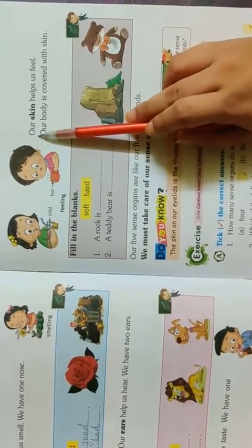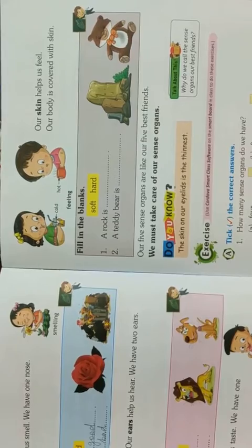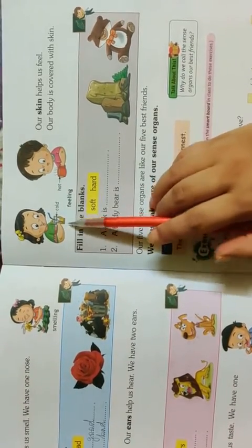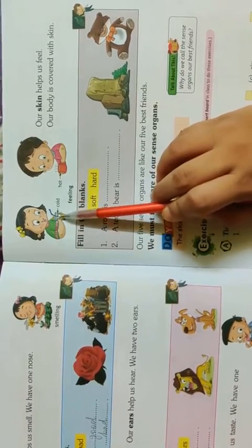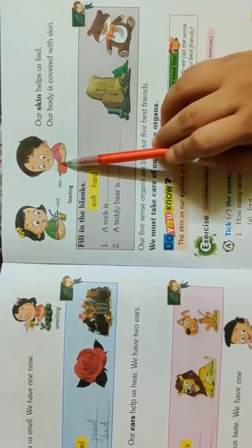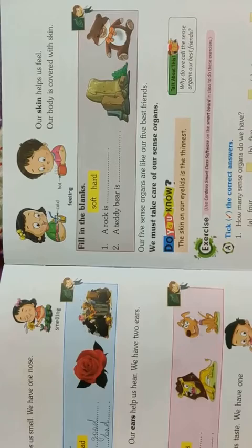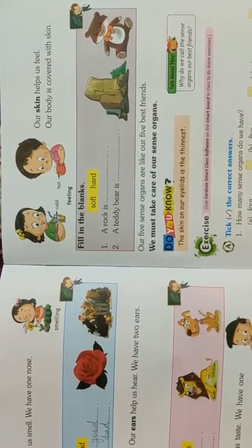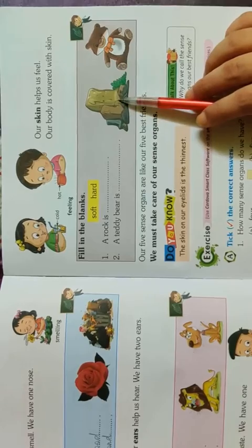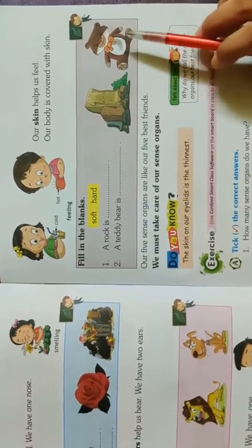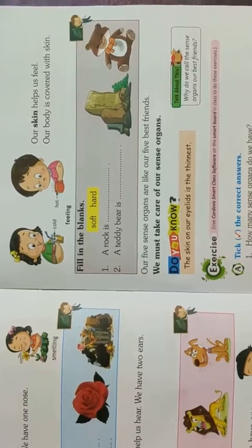The next sense organ is skin. Our skin helps us feel. Our whole body is covered with skin. This girl is holding a glass of cold drink with ice in it, and this boy is holding a hot cup. If we touch something hot or cold, we can feel it with the help of our skin. See this picture — a rock and a teddy bear. If you touch a rock it will be hard, and if you touch a teddy bear it will be very soft.